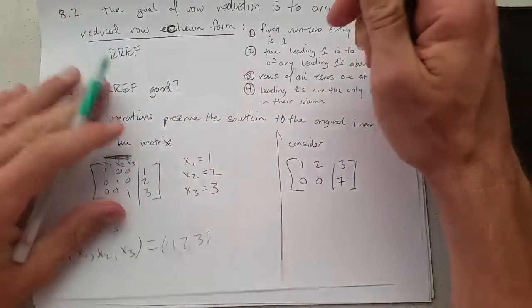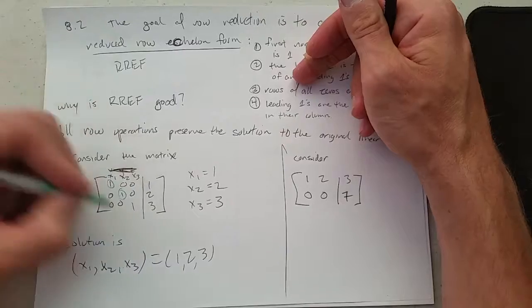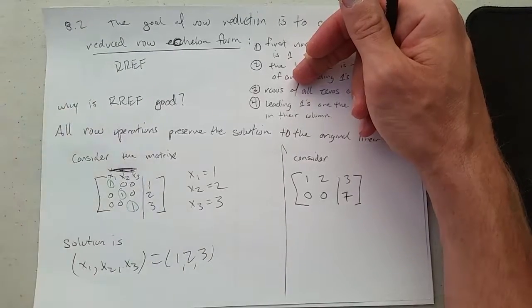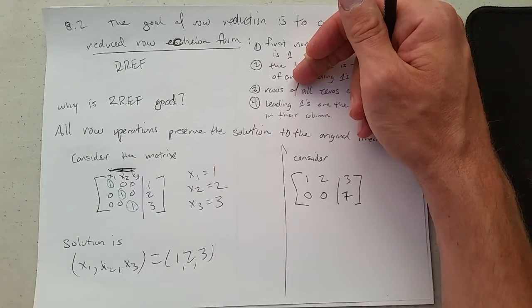How do I know there are no free variables? Think of these ones. This first one locked down x1. The second one locked down x2. The third one locked down x3. So there's only three variables. They're all locked down. There's none of them that are free.